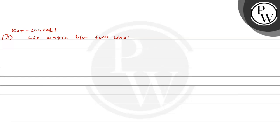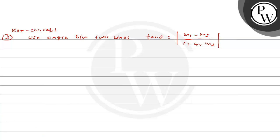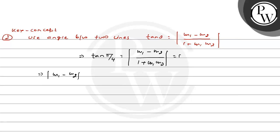This is the key concept: using the angle between two lines formula, tan θ = |m1 − m2| / |1 + m1·m2|. We know the angle between the two given lines is θ = π/4, so tan(π/4) = 1. Therefore |m1 − m2| equals |1 + m1·m2|.